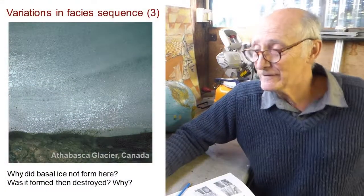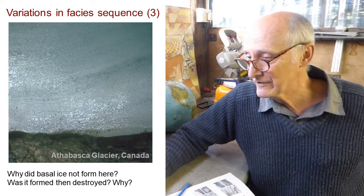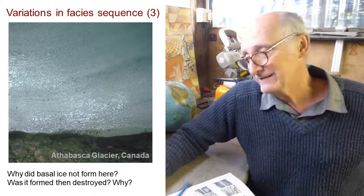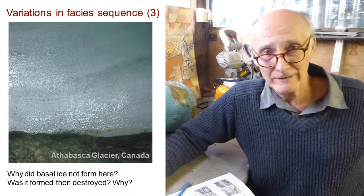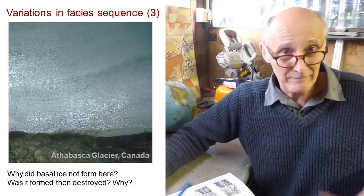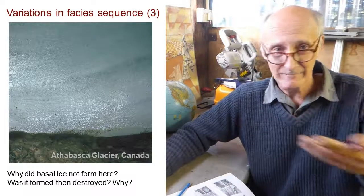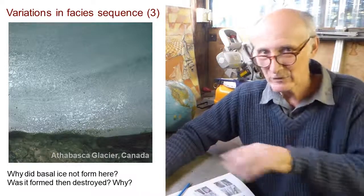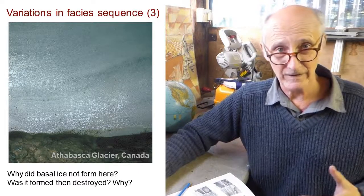Here's another example from the Athabasca Glacier in British Columbia, Canada — here there is no basal ice. You're looking at clean englacial facies, bubbly foliated white glacier ice resting on the glacier bed. So you might ask not only why does basal ice form, but why did basal ice not form here? Or maybe it did form here but was subsequently destroyed — basal ice can be melted off from the base of a glacier, perhaps created in some location and then melted off again as we move into a warmer zone close to the margin.